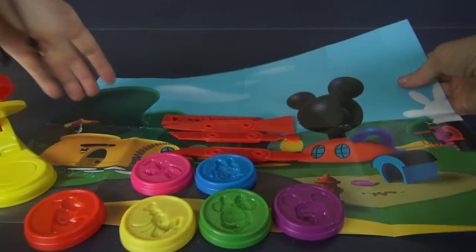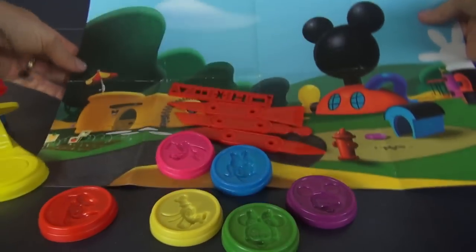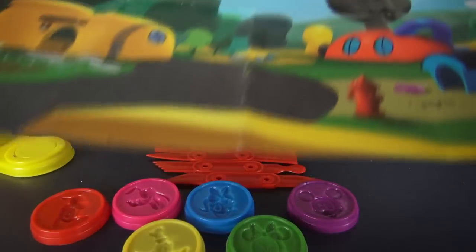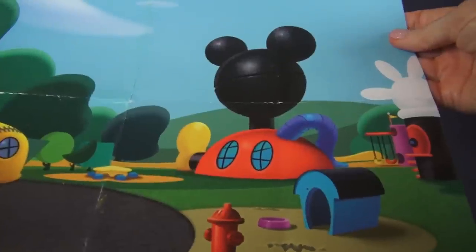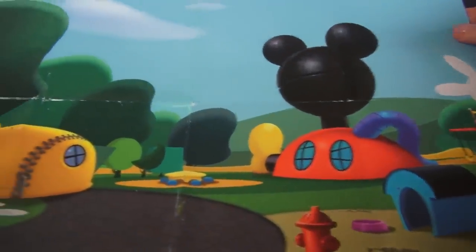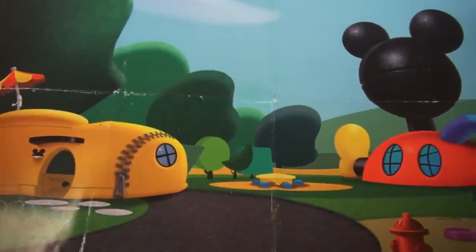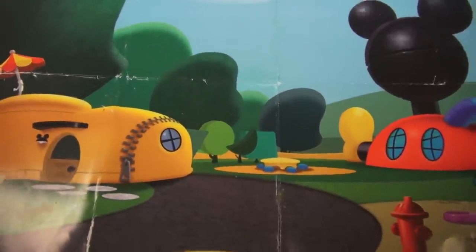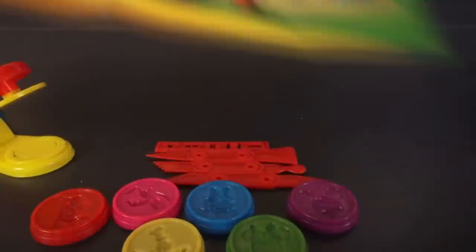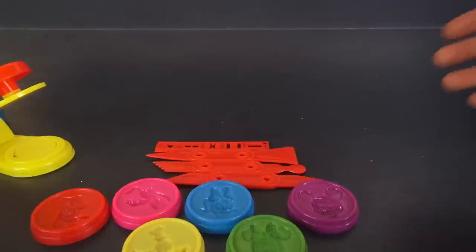And then we have a play mat. And at the end, look, you know what that is. It's Mickey Mouse's clubhouse. At the end, we'll use our characters that we stamp out to fill up our play mat. So let's get started.